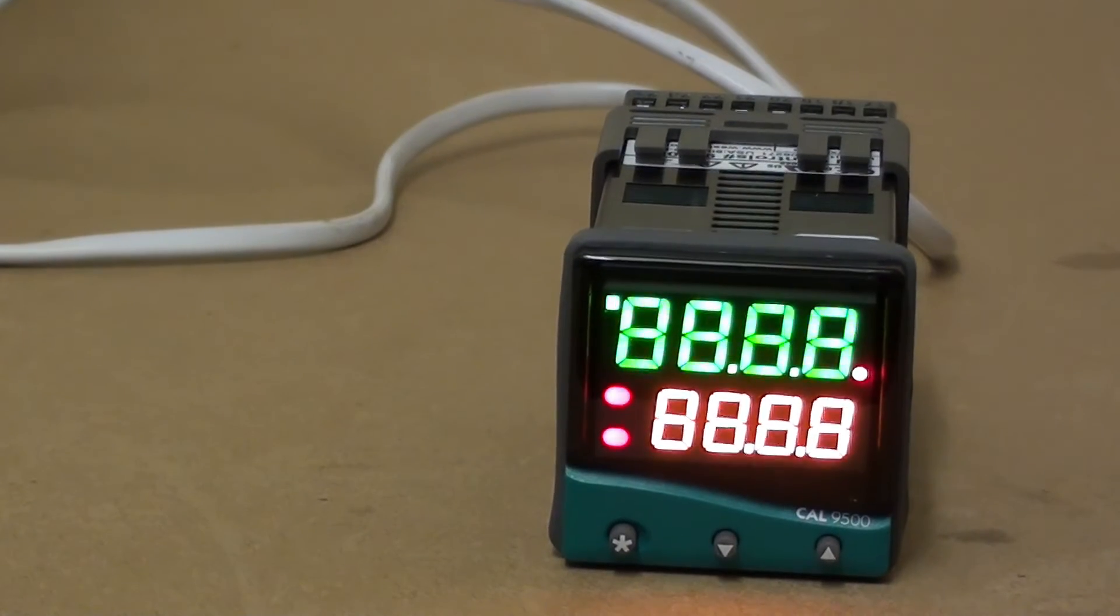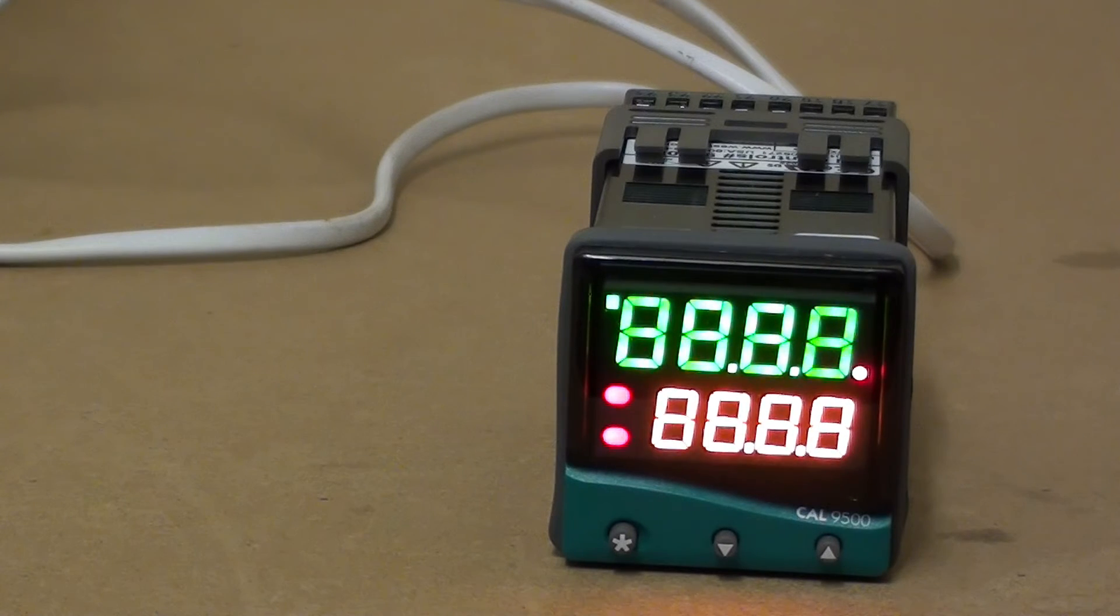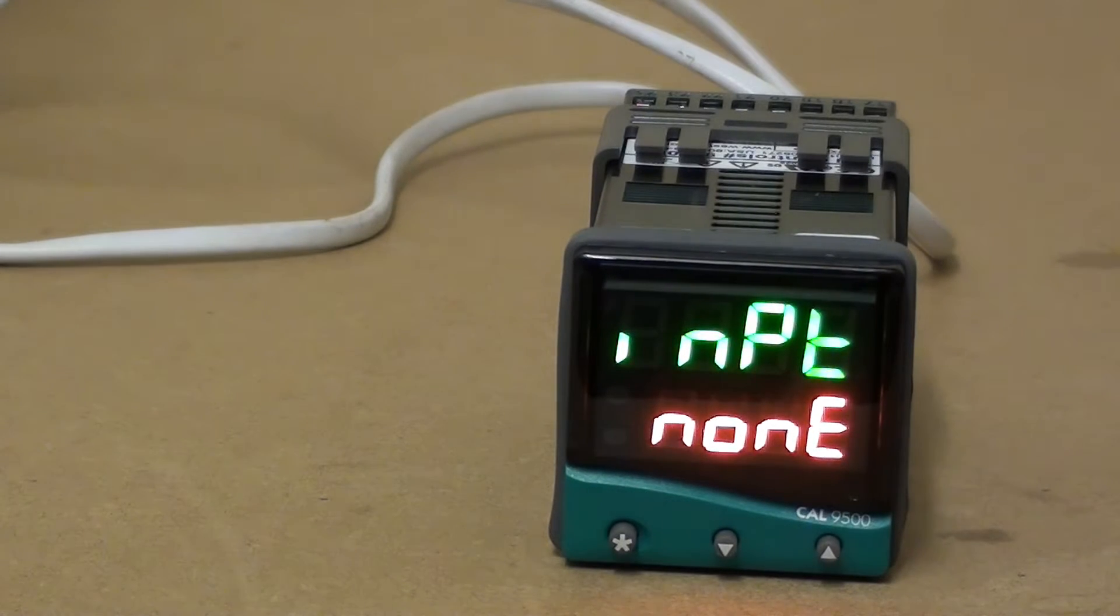When the controller is powered up for the very first time, it will go into the initial setup display and we'll see IMPT on the top and none on the bottom.